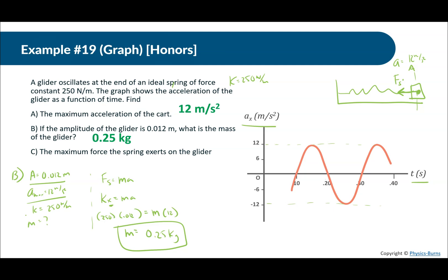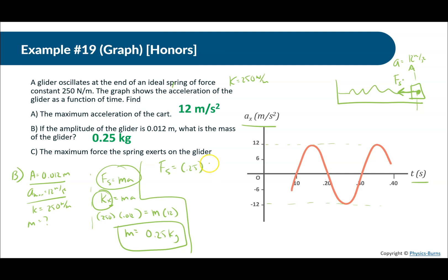Part C: What is the maximum force the spring exerts on the glider? We can use either mass times maximum acceleration or K times amplitude. Using F = m·amax = 0.25 × 12, we get three newtons.